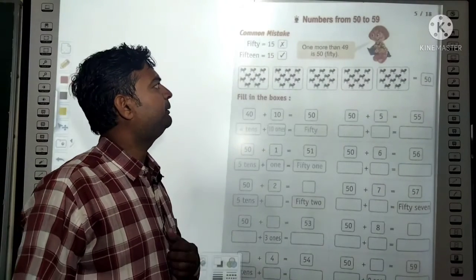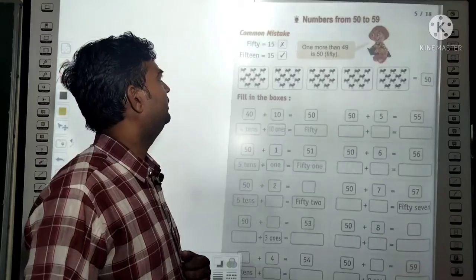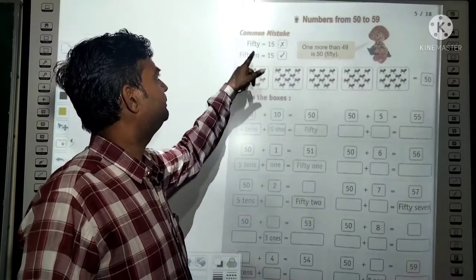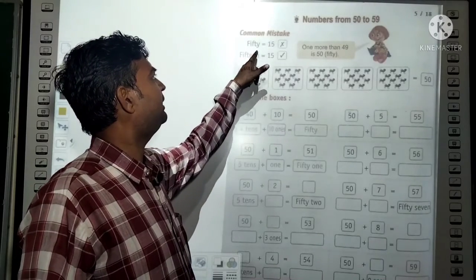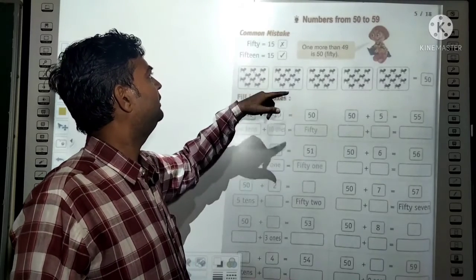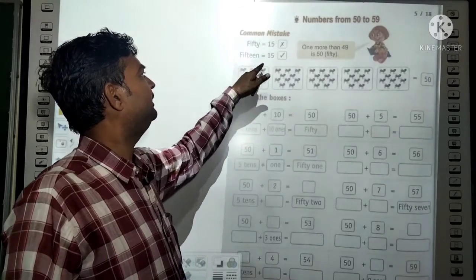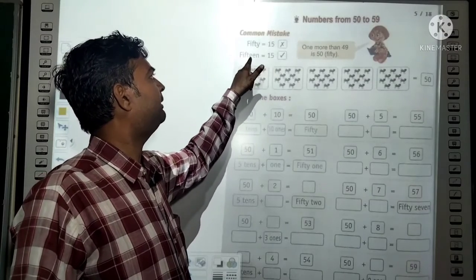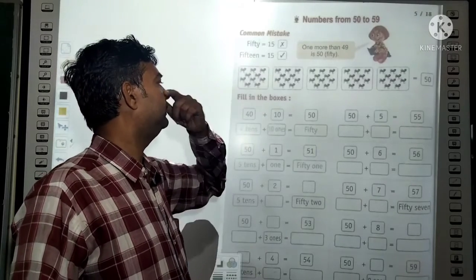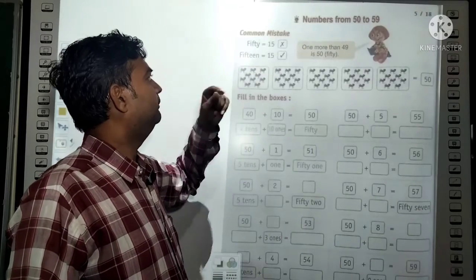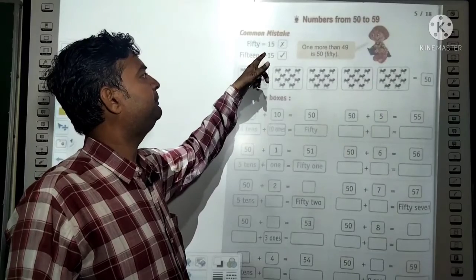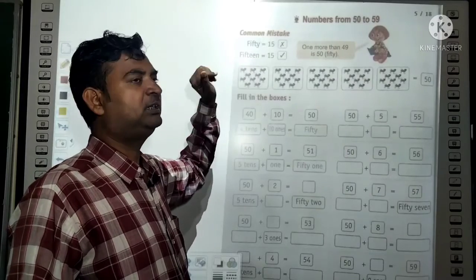Now, numbers from 50 to 59. A common mistake: students confuse 50 (F-I-F-T-Y) with 15 (F-I-F-T-E-E-N). The spelling of 50 is F-I-F-T-Y.